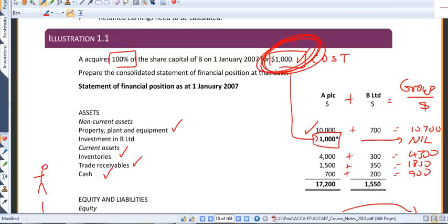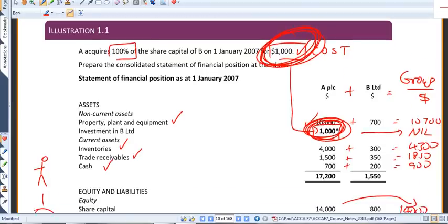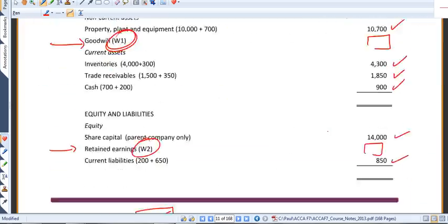Going back to our illustration, you might recall that we did indeed pay $1,000. That information was told to us in the first line of the question. It also appeared on A's own statement of financial position. Wherever you're looking, that's what we paid, $1,000.